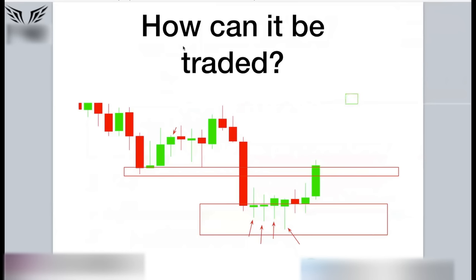Wicks also create premium price zones, which can be more profitable than traditional support and resistance when done correctly. Support and resistance comes from the past, whereas wicks represent the present — the best price action you can have is the present market telling you what to do. Supply and demand is a good example of using wicks to create supply and demand areas, though I prefer letting price action dictate the zones rather than just the wicks. I really hope this video helps you — wicks are one of the most important things you need to know.